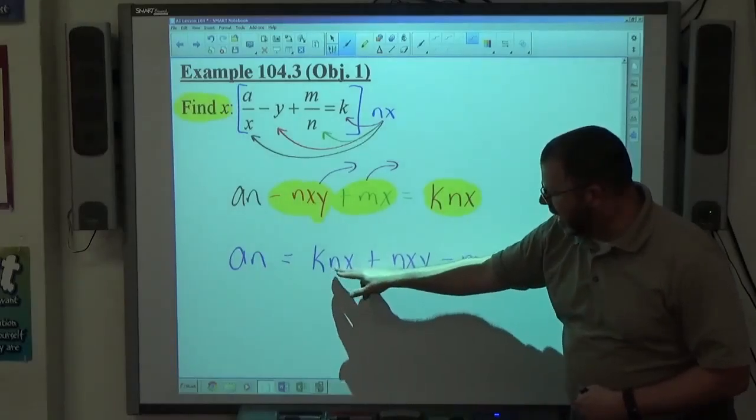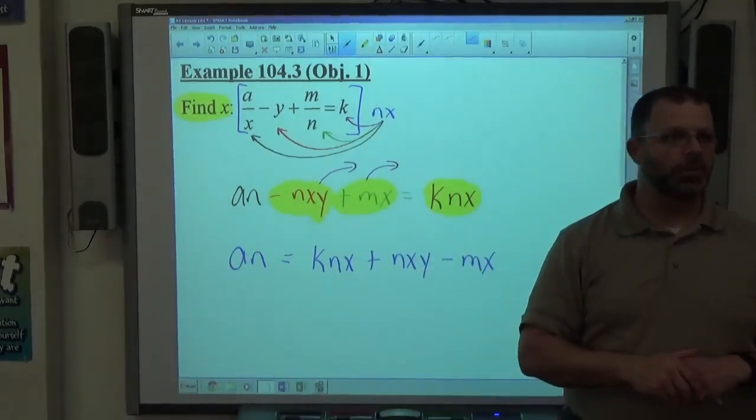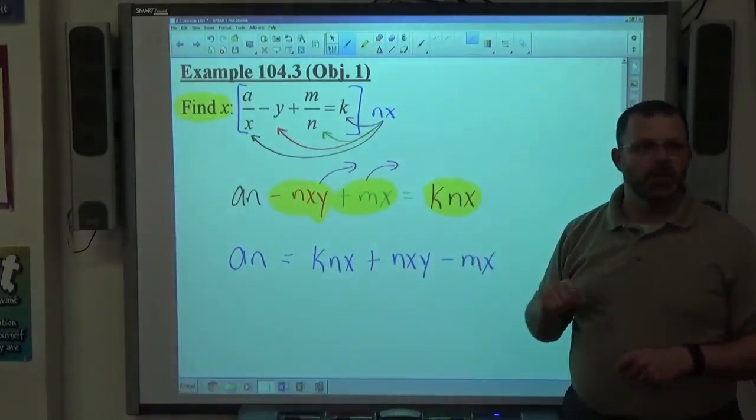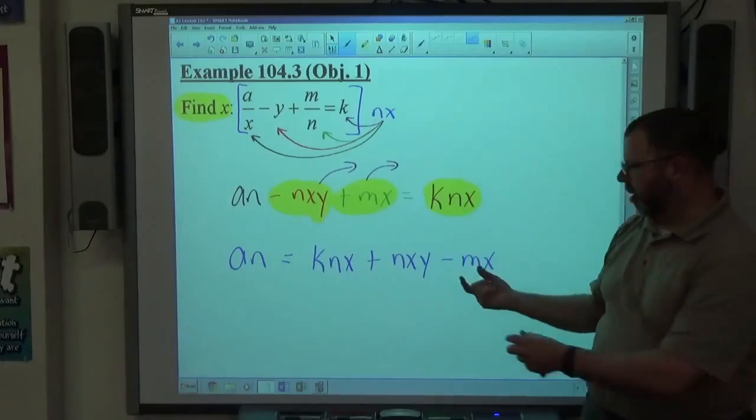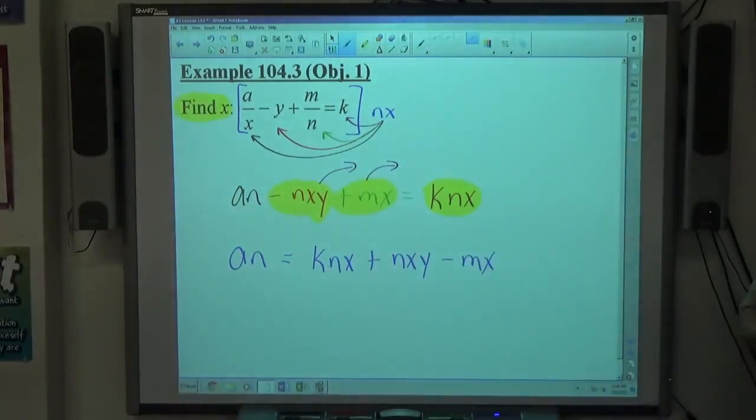And notice this happens sometimes. Notice NX, NX, and sometimes people think, well, those look kind of the same, so maybe we should do something with them. But they don't match exactly. KNX and NXY aren't the same, so there's no like terms there. Even though part of it's like, the K and the Y are different, so that doesn't allow us to add them together.